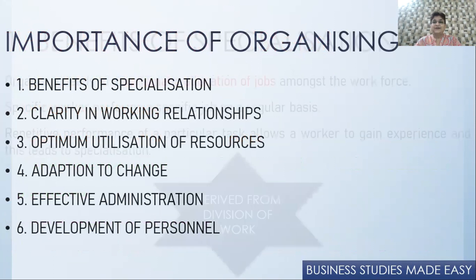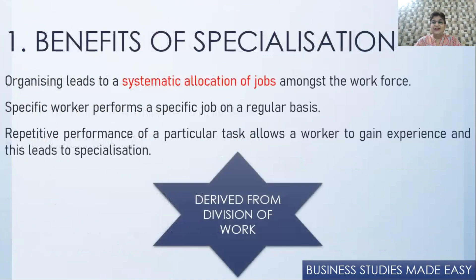There are six importances of organizing. I've tried to relate these to the steps we've already done. The first is the benefit of specialization. The first step in organizing was division of work — when work is divided, one person does only one type of job. When they keep doing that particular job they start specializing in it. He can close his eyes and do the job — that leads to specialization, which is the foremost importance of organizing.